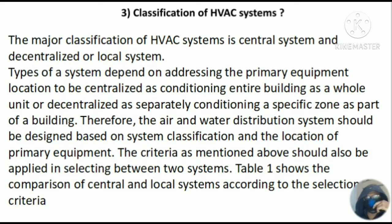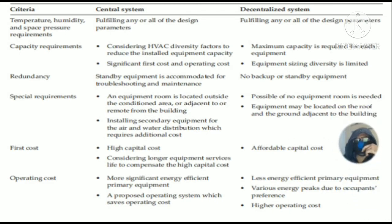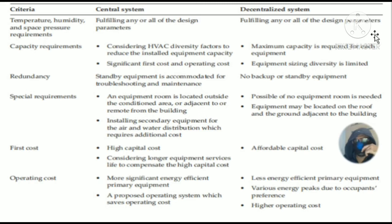There is a chart that should be visible. These two system criteria can be seen. For temperature, humidity, space, and pressure, both central and decentralized will be the same because we need comfort conditions in both. But the capacity requirement is different — the maximum capacity requirement and equipment sizing is diverse for central systems. Installation cost depends on first cost and operating cost, which is slightly different.